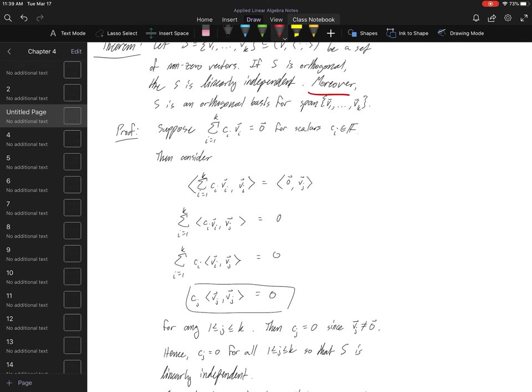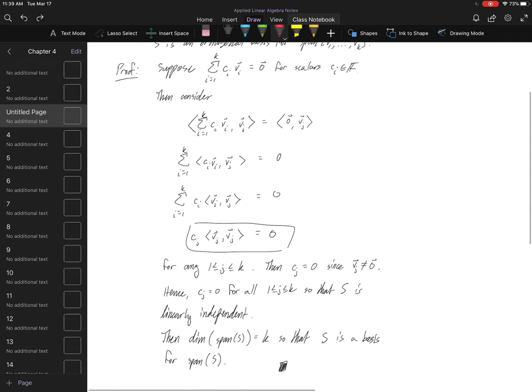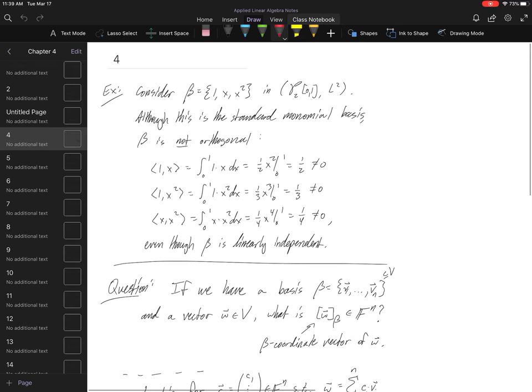The last statement about spanning: these vectors span their own span. And we've just shown they're linearly independent. So they're actually an orthogonal basis for their span.